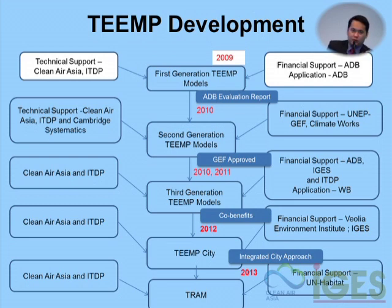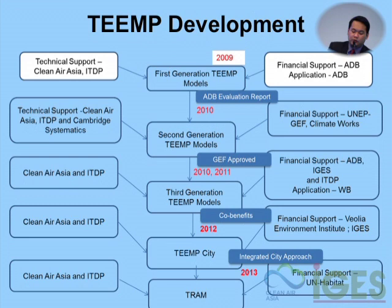We wanted to roll the tools out more broadly and make them user-friendly, so we got support from ITDP, Cambridge Systematics, ClimateWorks. This was approved by the Global Environmental Facility, so participants applying for GEF funding for transportation projects can use the TEMP models to calculate CO2 emission reductions for those projects.